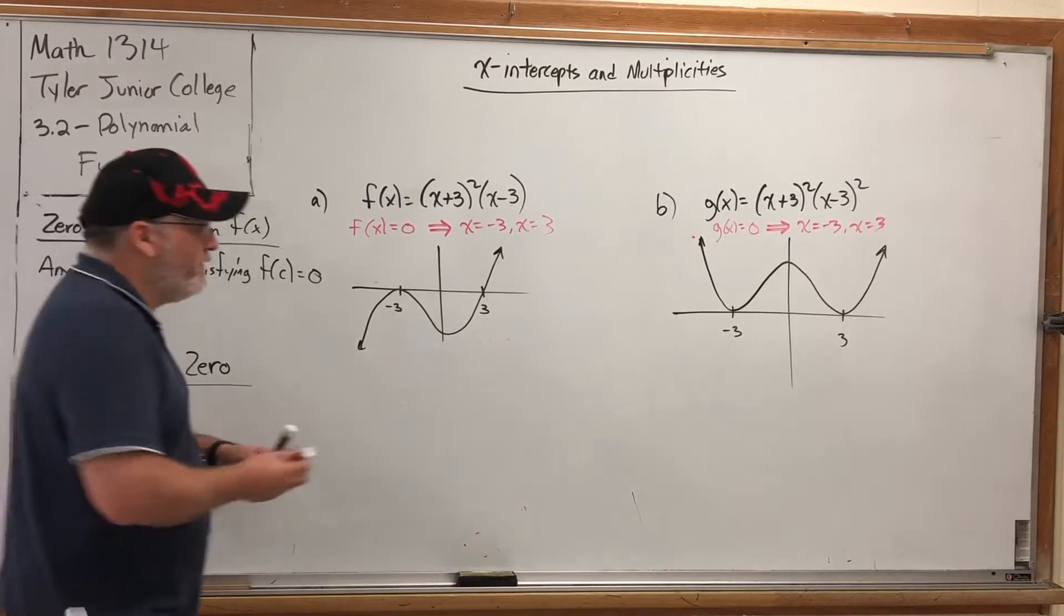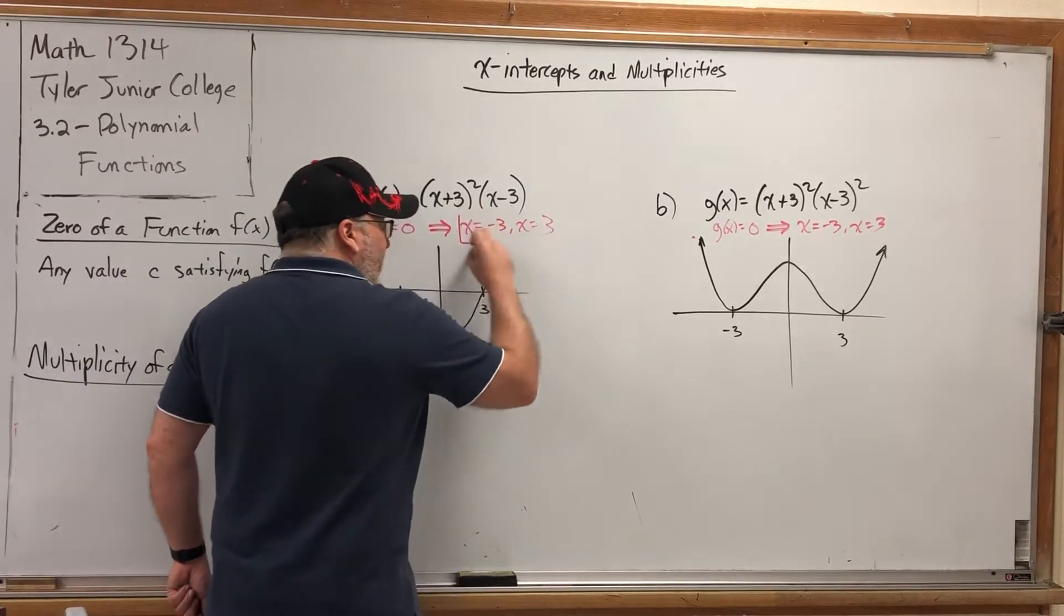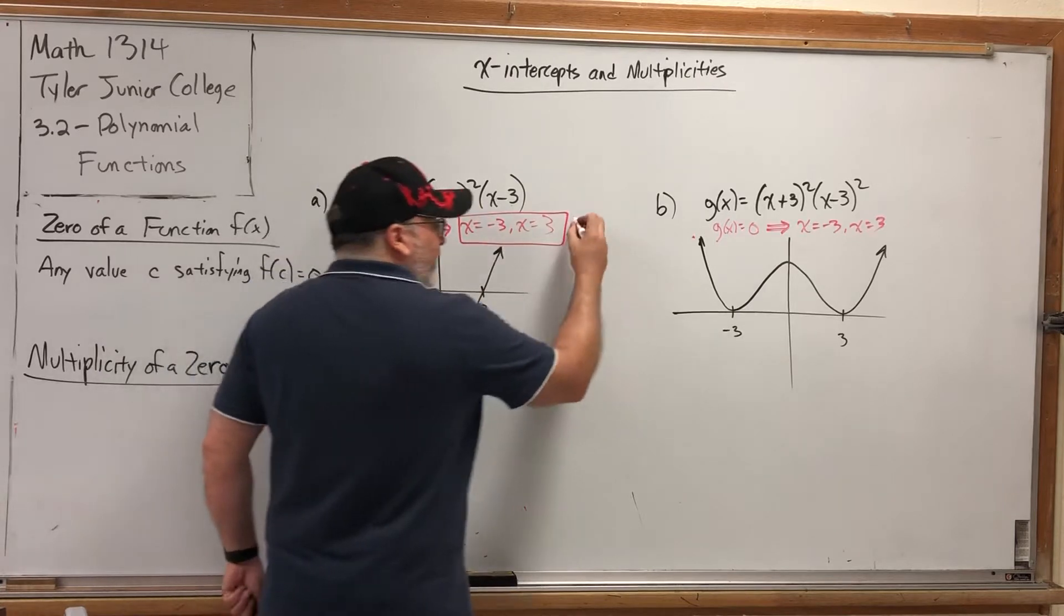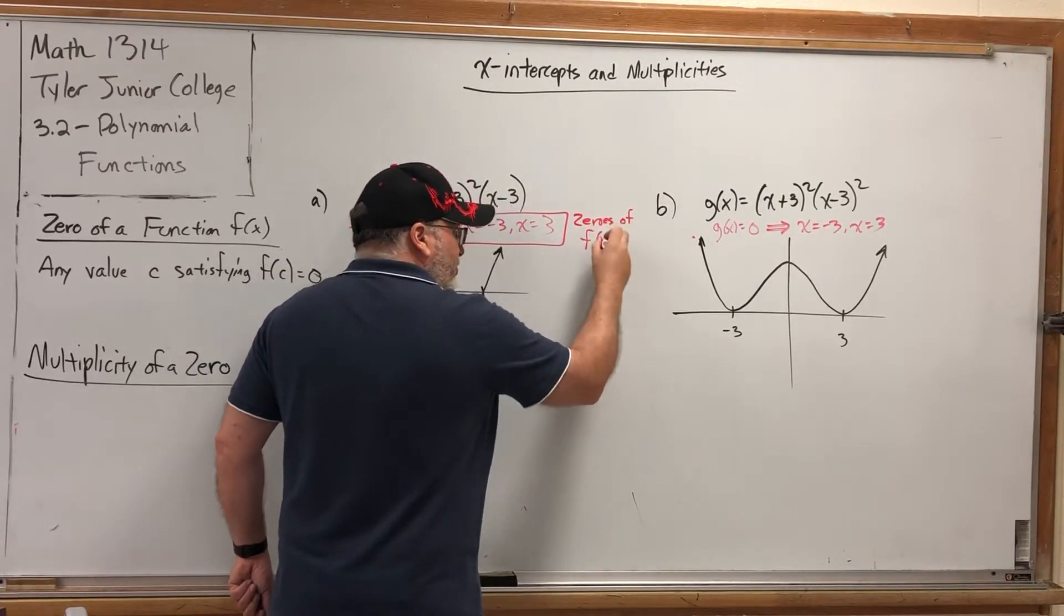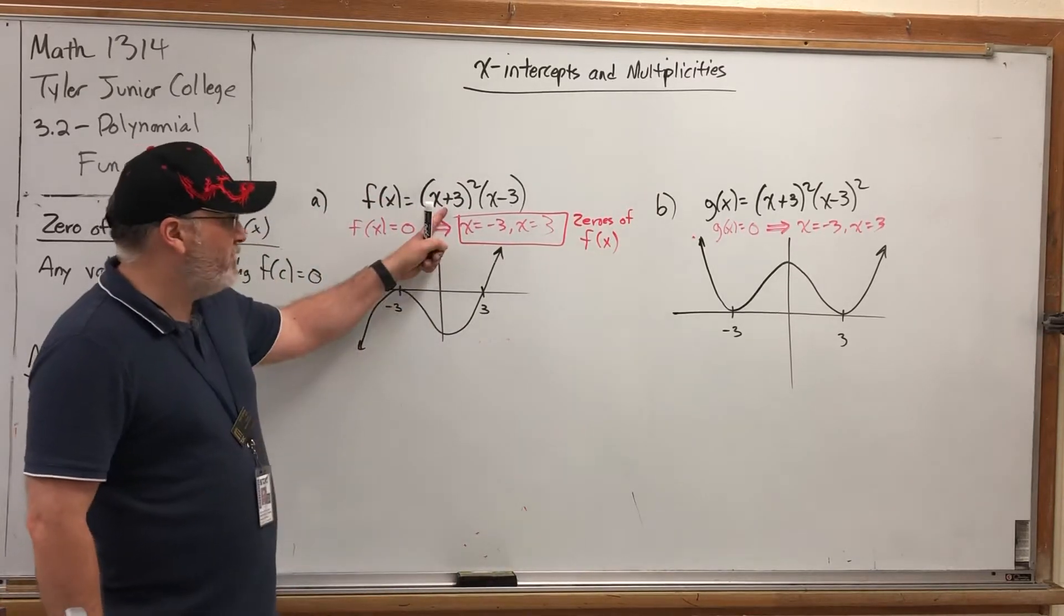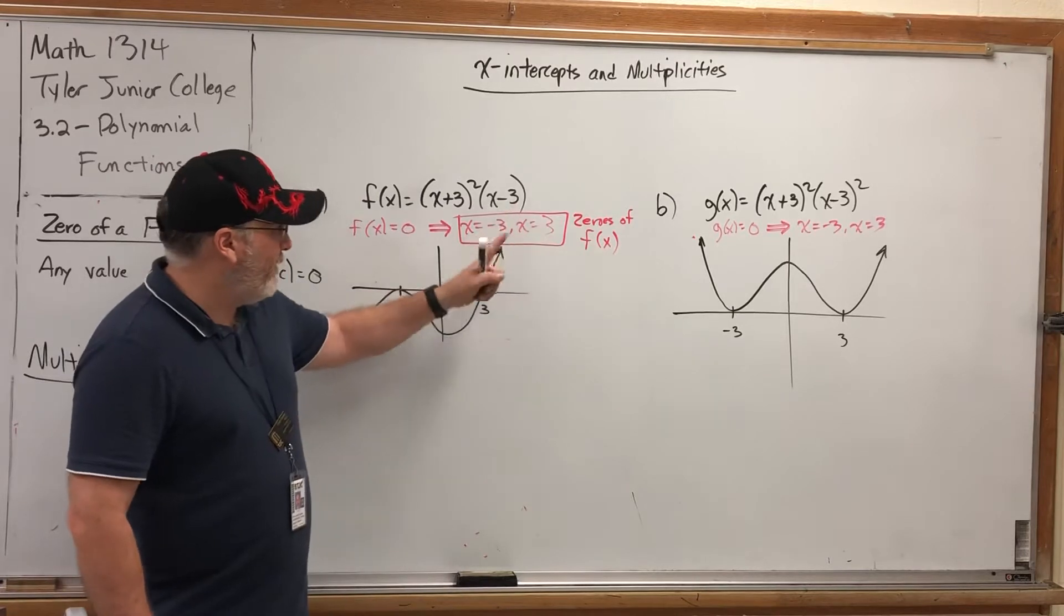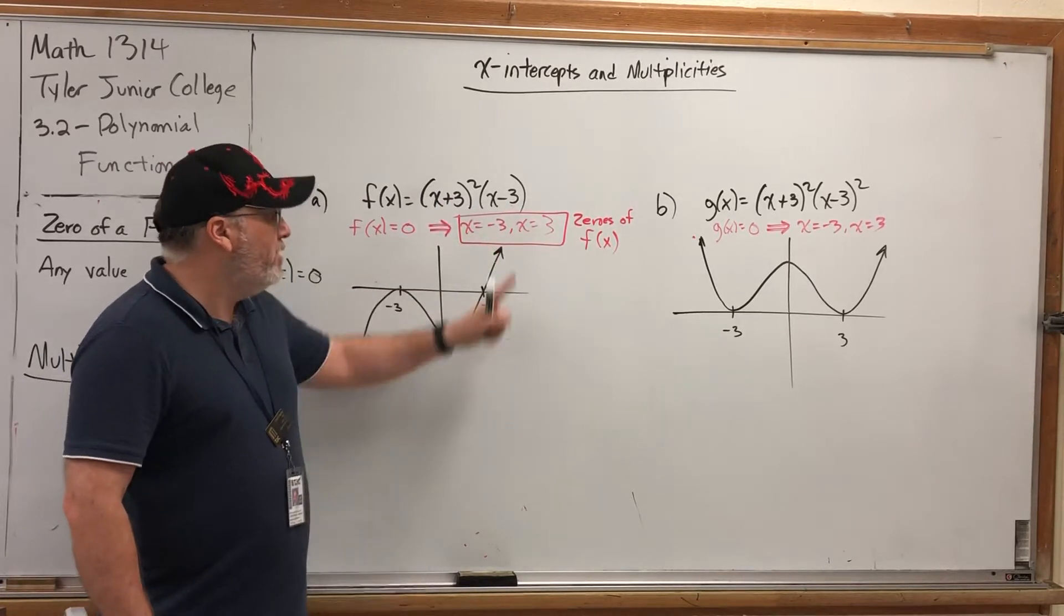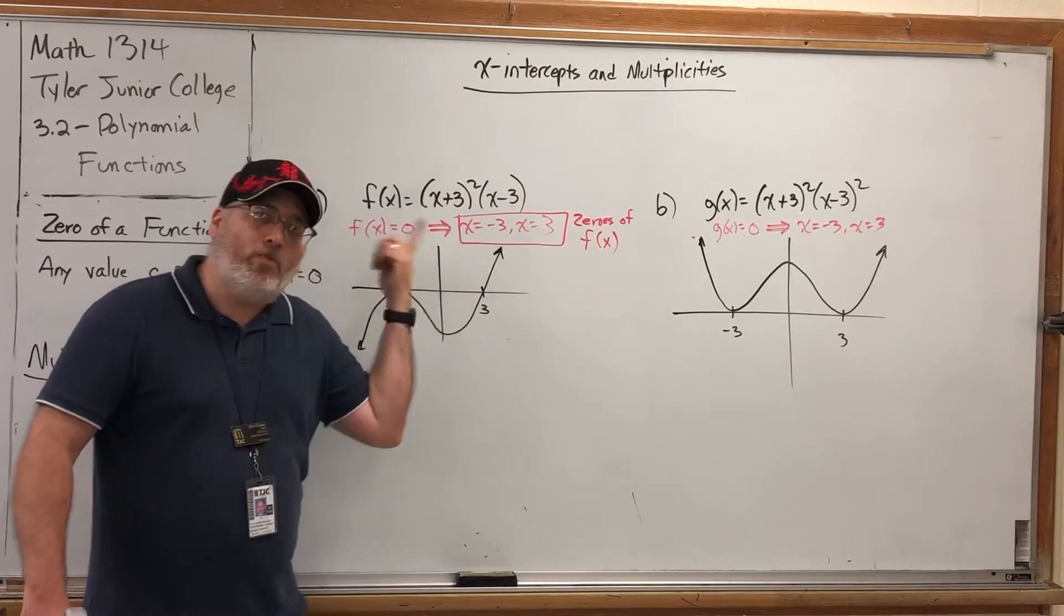So for example, in this first, and both of these actually, both of these values, negative three and three, these are zeros of F of X. If I put three into this function we'll make this factor zero and therefore the whole product zero. If I put negative three into the first factor, I get zero. If I put three into the second factor, I get zero, which makes the whole product zero.